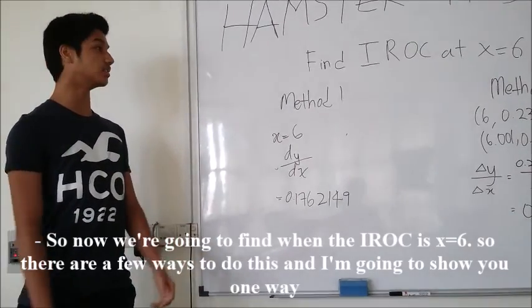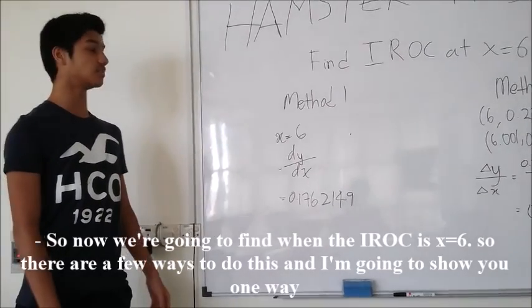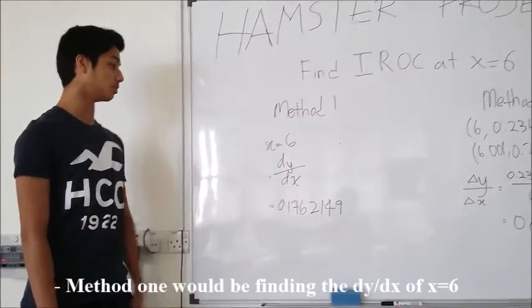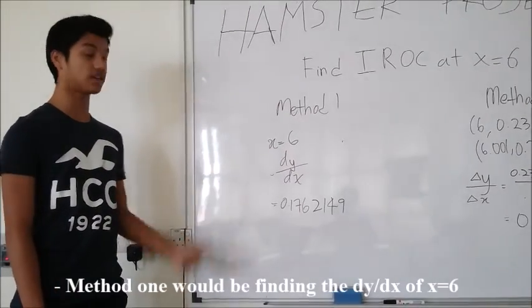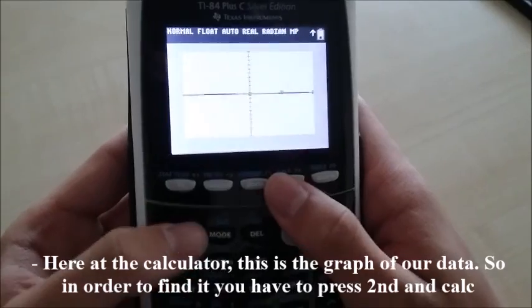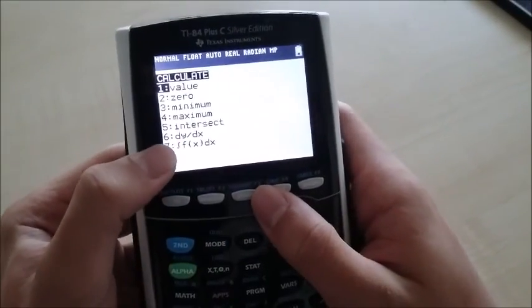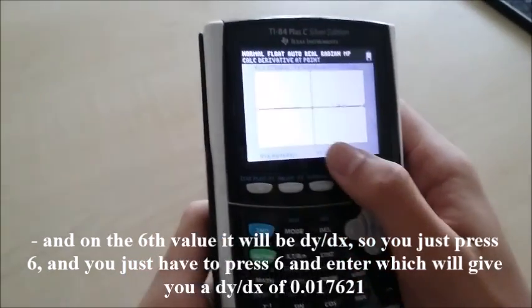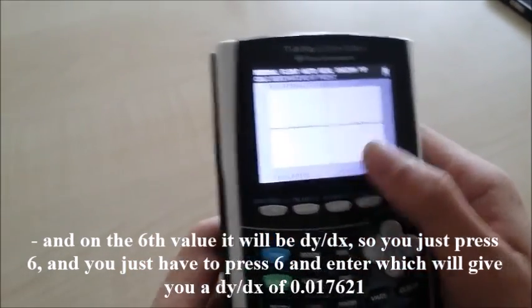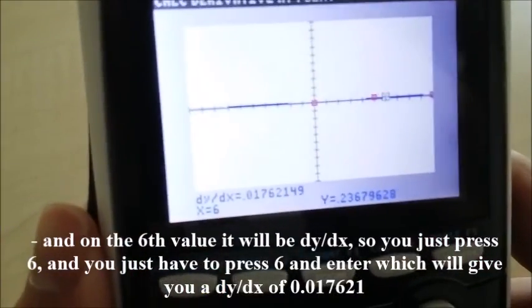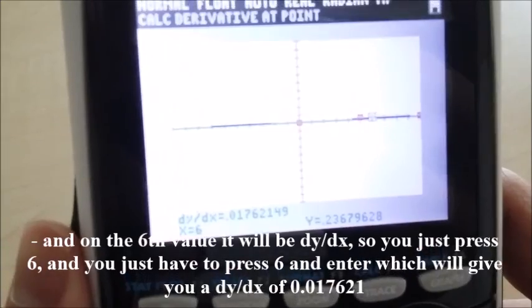Okay, so now we're going to find when the instantaneous rate of change is x equals to 6. So there are a few ways to do this, and I'm going to show you one way. Method 1 will be finding the dy dx of x equals to 6. So here at the calculator, this is the graph of our data. So in order to find it, you have to press 2 and calc, and on the 6 value, it will be dy dx, so you just press 6. Then in order to find it, this is already registered at x, so you just have to press 6 and press Enter, which will give you a dy dx of 0.01762149.